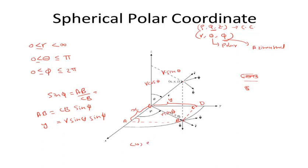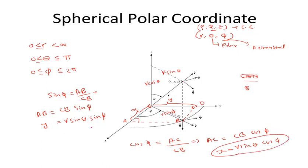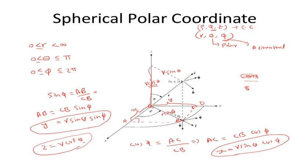Now if I consider cos phi, then cos phi equals adjacent side AC by hypotenuse CB. This implies AC equals CB cos phi, and CB is r sin theta, so AC equals r sin theta cos phi. And AC equals x. So x equals r sin theta cos phi, y equals r sin theta sin phi. For z, the z-component is r cos theta. These three form the transformation equations from Cartesian to spherical polar coordinate system.